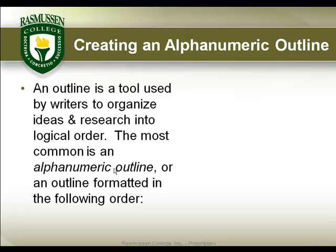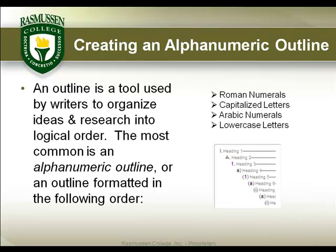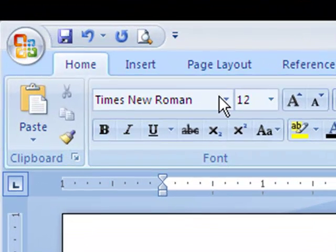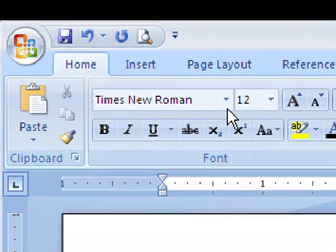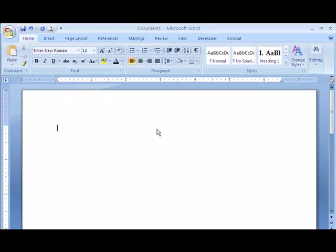Now that you have your ideas, how do you create a well-formatted outline? The most common type is an alphanumeric outline, formatted using Roman numerals, followed by capitalized letters, Arabic numerals, and finally lowercase letters. Each main heading usually denotes a new paragraph. To create this in Microsoft Word 2007, first ensure that Times New Roman font, Size 12, is selected — consistent with APA standards. Next, include the title of your paper at the top of the outline in centered format.